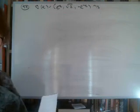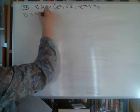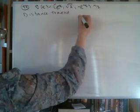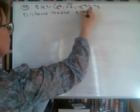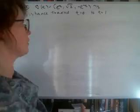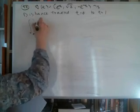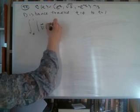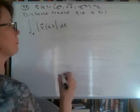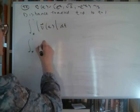Now what we want to do is calculate the distance traveled between time t equals zero and t equals one. This is slightly different than our displacement. For distance traveled, I have to take the magnitude of my velocity ahead of time. I'm going to go from zero to one and take each component of my velocity.